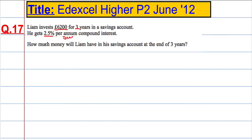Compound interest is where you get interest on the interest. How much would he have in his savings account at the end of the three years? We can use a formula. If you know the formula, it's fairly straightforward. The amount is equal to the principal — which is what you invest — multiplied by 1 plus R, which is the rate, to the power of N, the number of years.